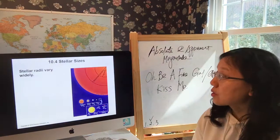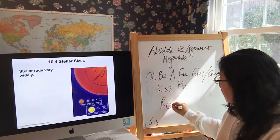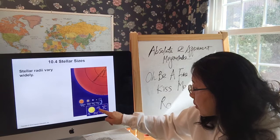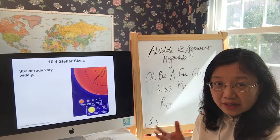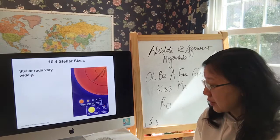Star sizes vary dramatically. The Sun is one reference point with radius 1, Jupiter is about 0.1, and Capella is 15 times the size of the Sun. The Sun is actually a very ordinary star in terms of size and brightness compared to the many stars we'll categorize later using the HR diagram.